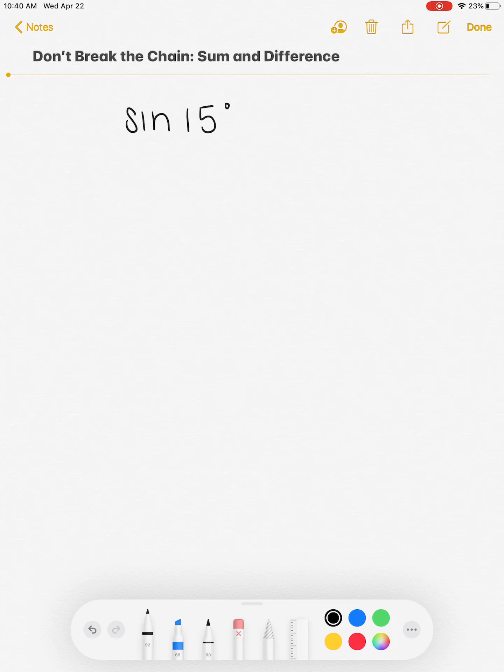All right, so if I'm going to solve this first problem on the don't break the chain activity, the first thing I'm going to do is write down sine of 15 degrees because that's the problem. The square root of 6 minus square root of 2 that's in the blue box is the answer to a different problem. So I'm just looking to solve sine of 15 degrees.